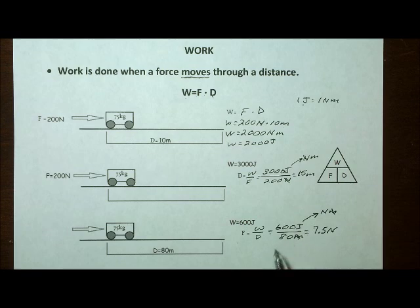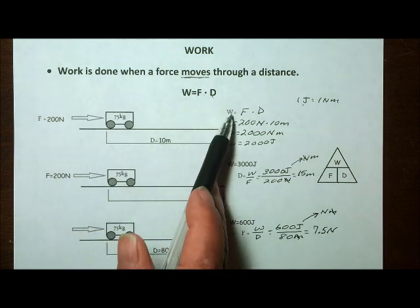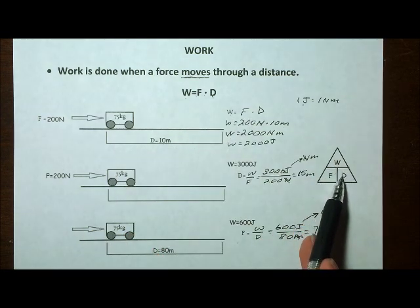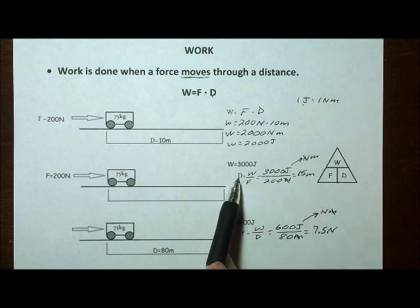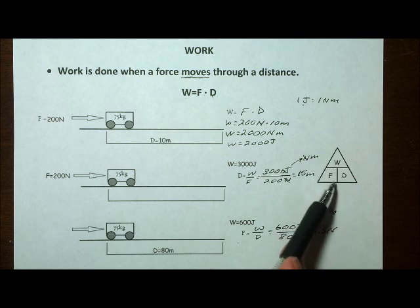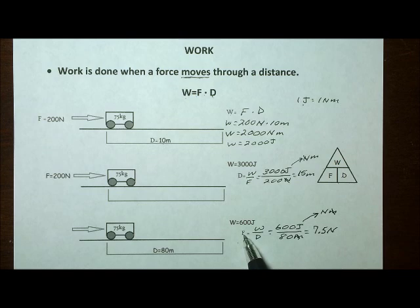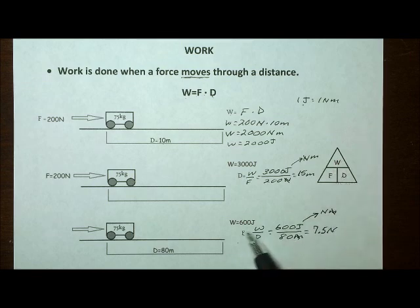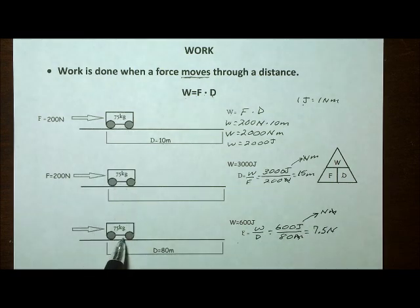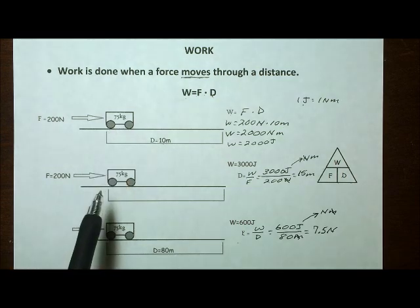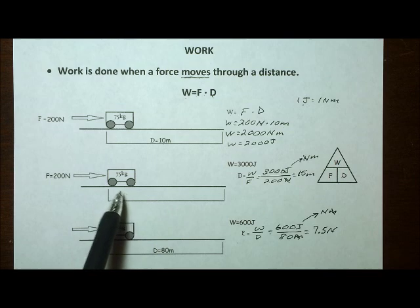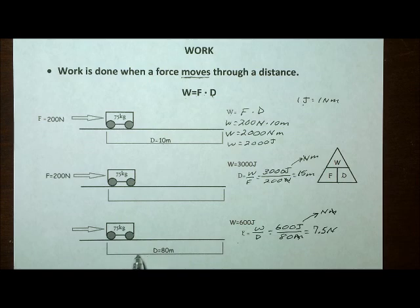So here's the situation. We can calculate three things using this equation. We can calculate the work done — work is force times distance. We can calculate distance — distance is work divided by force. And we can also calculate force if we're given work and a distance — force is work divided by distance. We can calculate the work done, the distance moved given a particular force doing a certain amount of work, and the force applied to do 600 joules of work moving the cart through 80 meters.